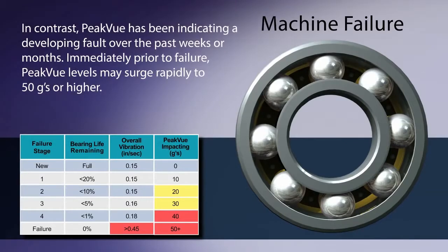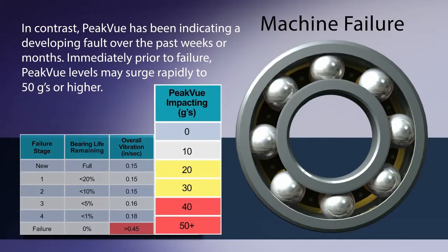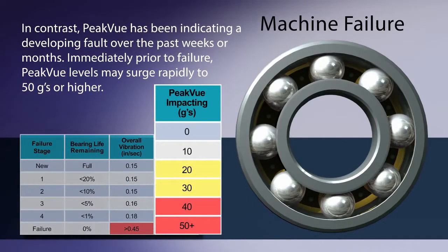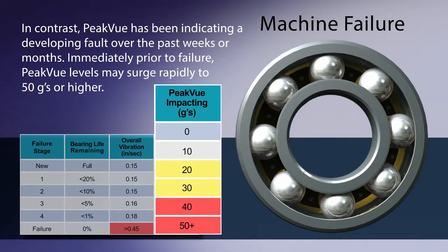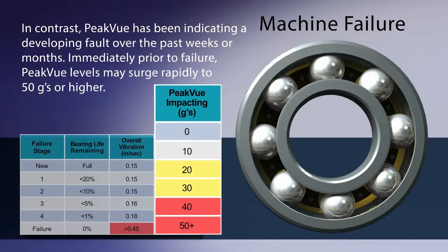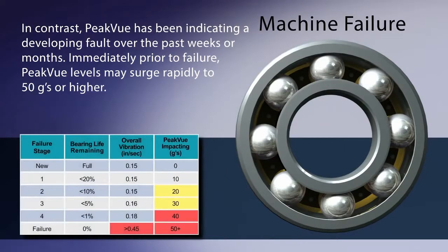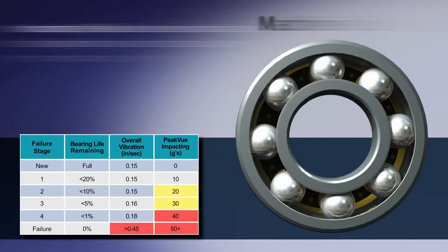In contrast, peak view has been indicating a developing fault over the past weeks or even months. Immediately prior to failure, peak view levels may surge rapidly to 50 G's or higher.